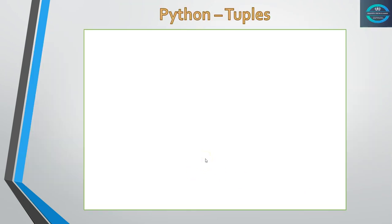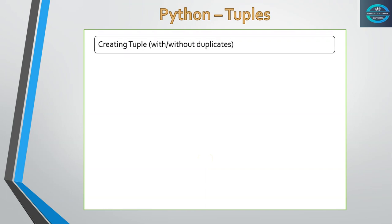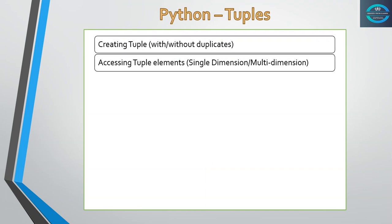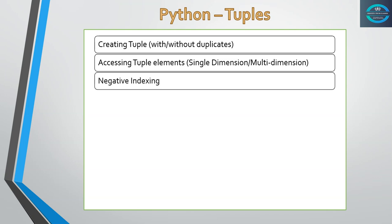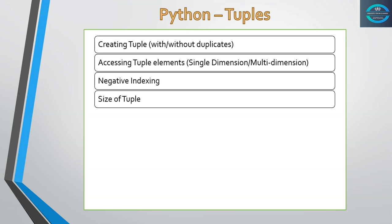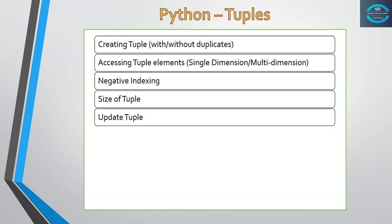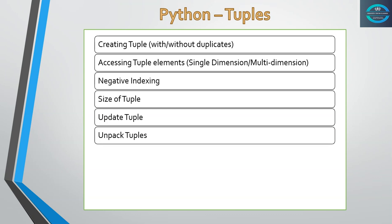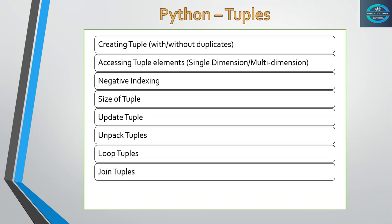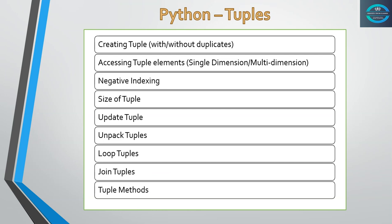What exactly are we going to cover? We are going to cover how to create tuples with or without duplicates, accessing tuple elements in single and multi-dimension tuples, how to use negative indexing, how to find the size of a tuple, how to update a tuple — it's immutable but there is a trick — how to unpack tuples, how to loop tuples, how to join tuples, and what methods are allowed on tuples. Let's go to the PyCharm IDE and see how to use them.